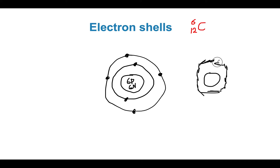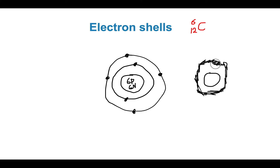But why do we draw it like this? Because scientists cannot really be sure at any one point of the exact location of an electron. So, really, an orbital — which looks like the solar system but actually is not — represents something different.